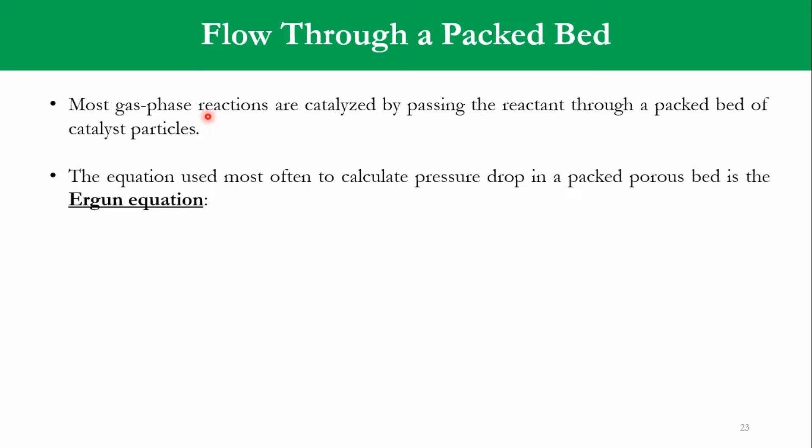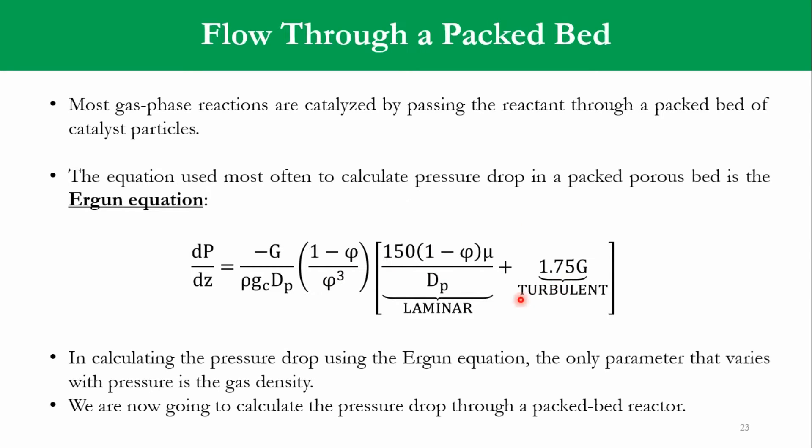The equation used to calculate pressure drop in packed porous bed is the Ergun equation. The only parameter that varies with pressure is the gas density. G is a constant particle diameter, velocity, viscosity, and G is a constant factor as well. Since this parameter is the variable in this equation, we have to now compute some parameters to get our equation right. We are now going to calculate the pressure drop through a packed bed reactor.